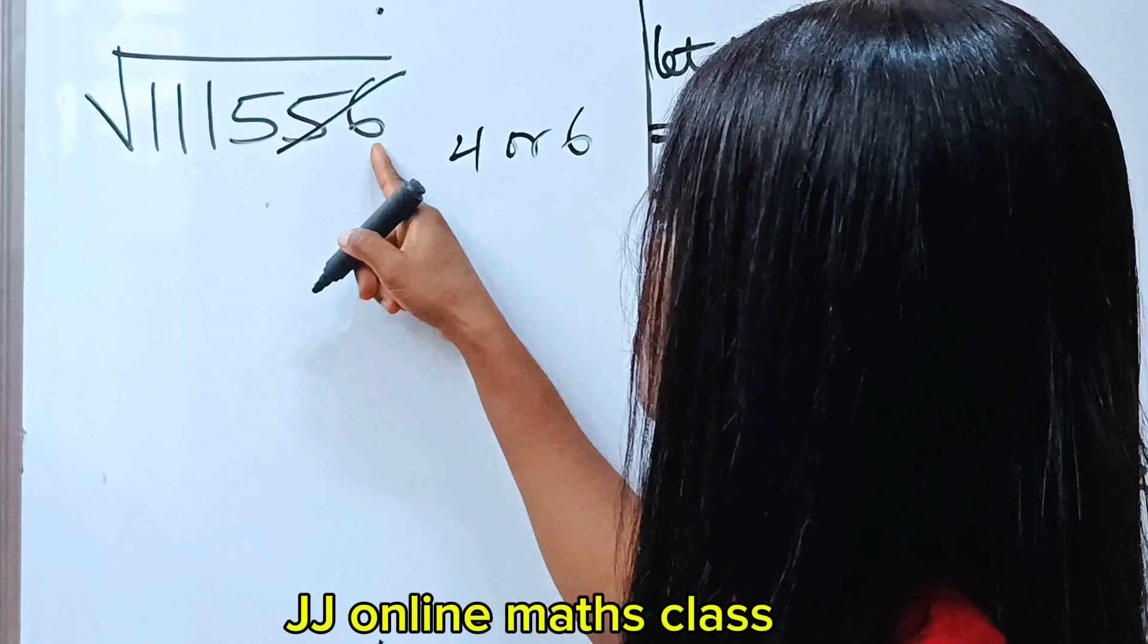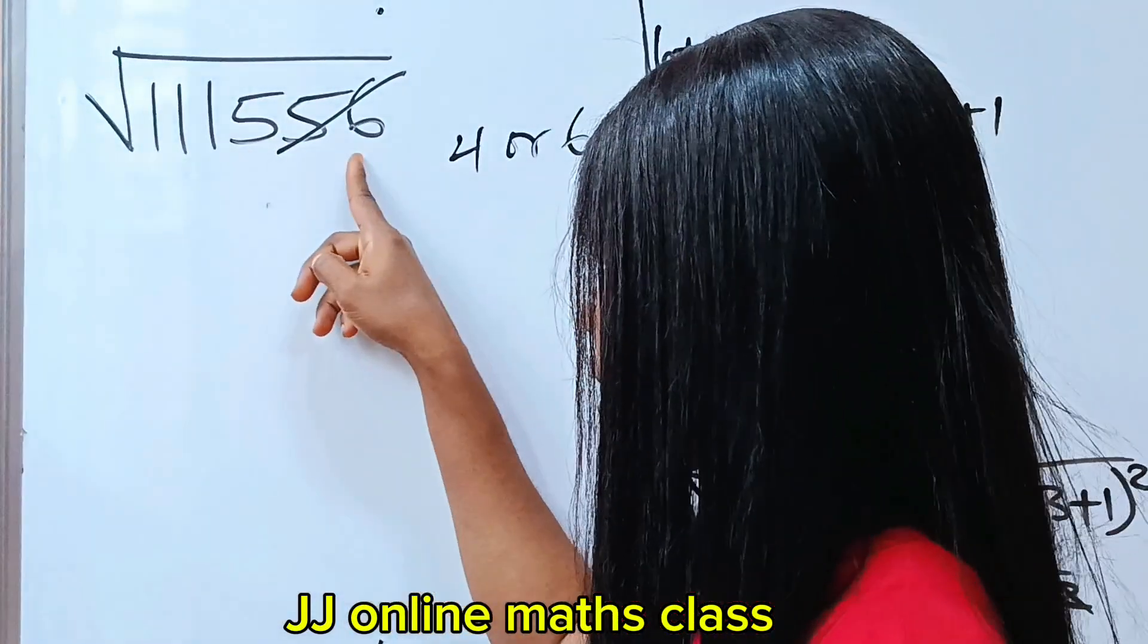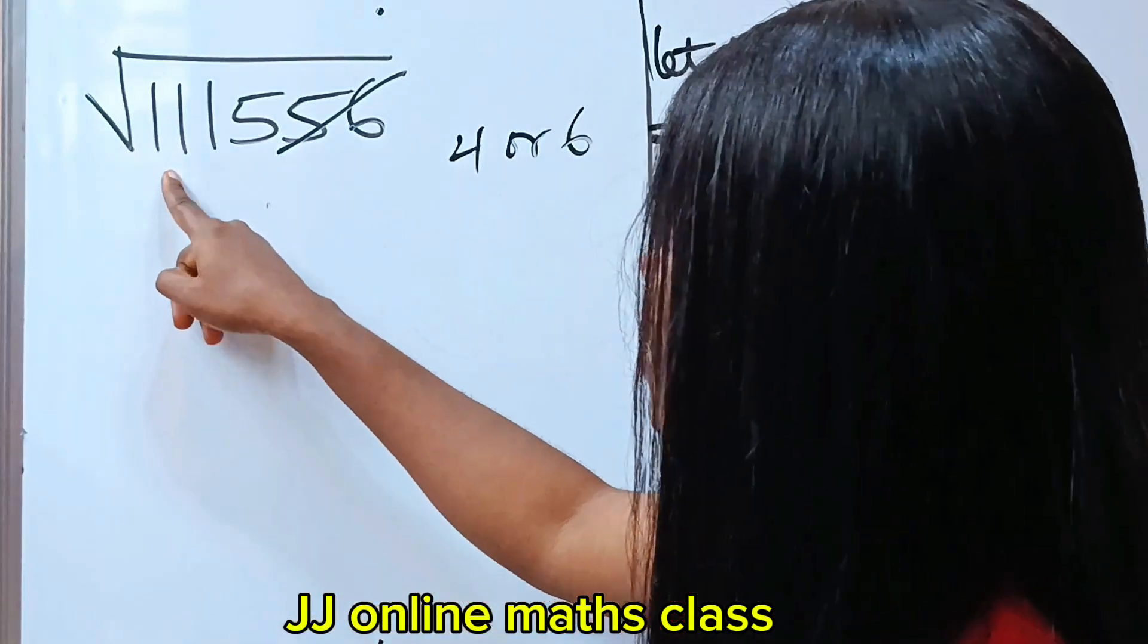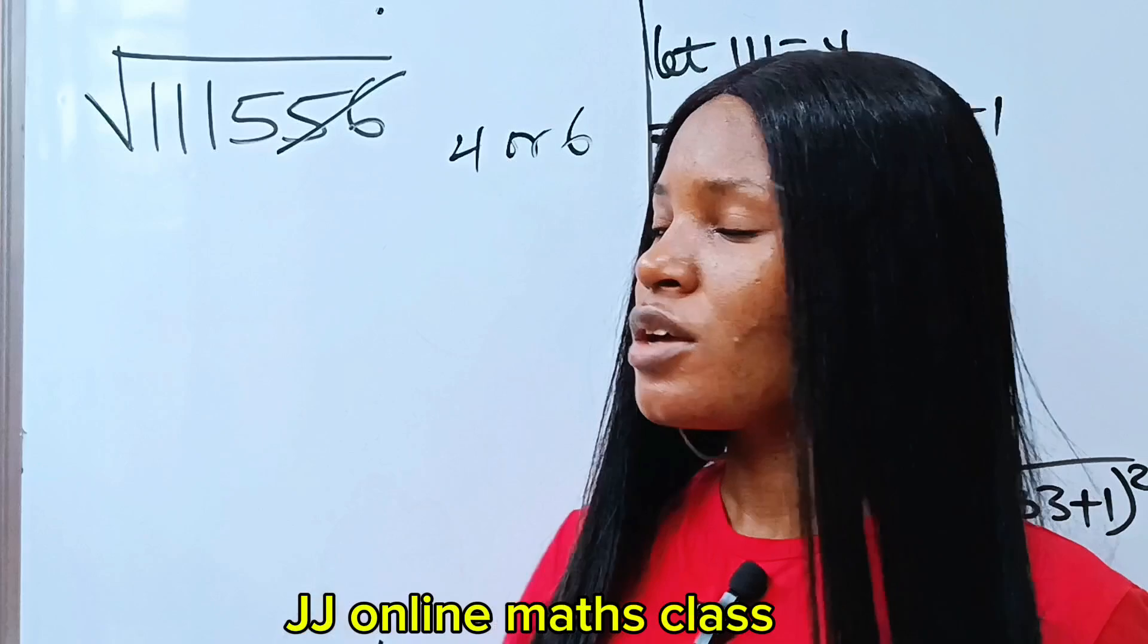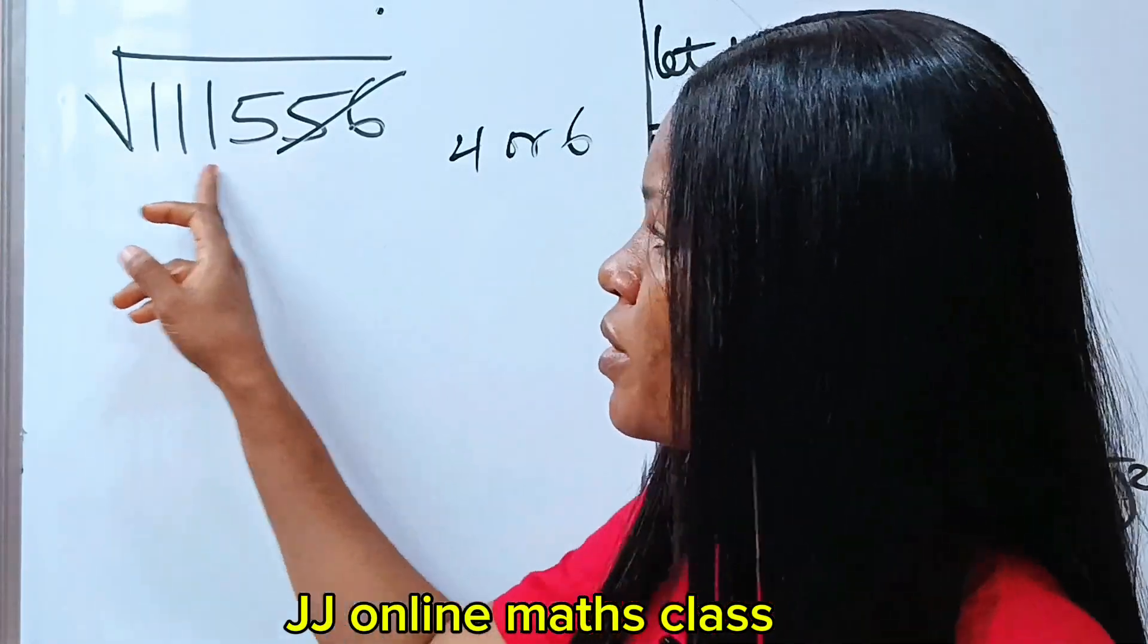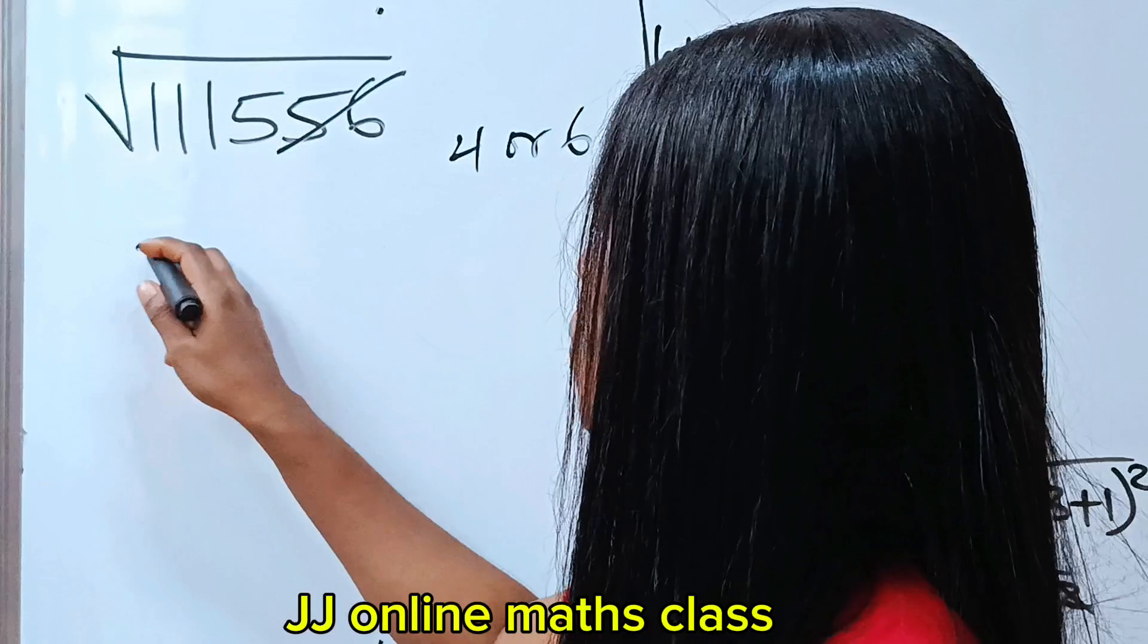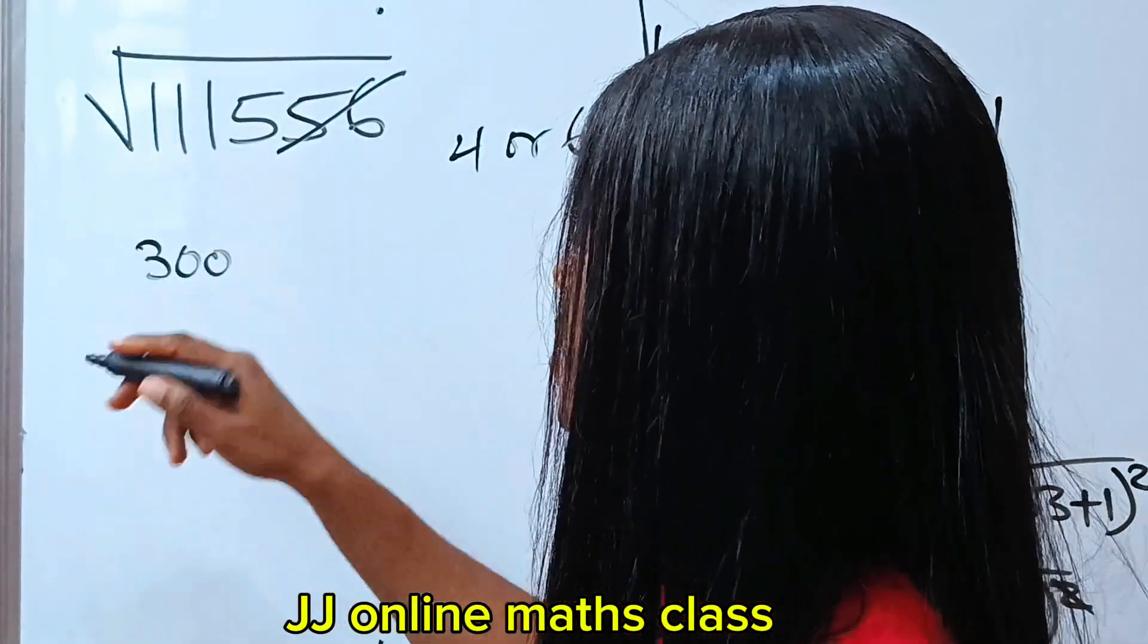So, either 4 or 6 will be the last number. Then, you are going to cancel the last 2 digits. This is square root. If it is cube root, you cancel 3. But, since it is square root, cancel these 2. Now, you have 1115. What number will you square to get a number that is close to this but not above this? If you check it, 30 squared will give us 900, which is still far from this.